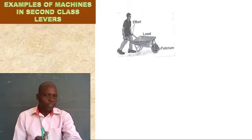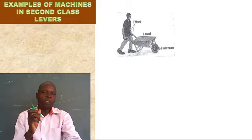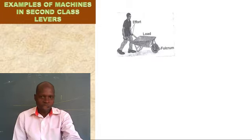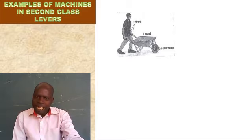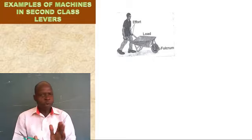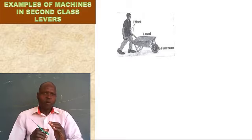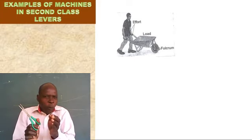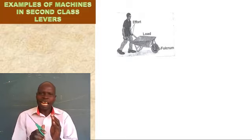So if the load is the one which is between the fulcrum or pivot and the effort — because fulcrum can be called pivot — if it is the load which is in the middle of these two, and effort is there and pivot or fulcrum is here, then the middle one is the load. That is now a second class lever. So whichever tool we are going to have, if we see the load is in the middle of effort and fulcrum, that tool we are going to say it is a second class lever.